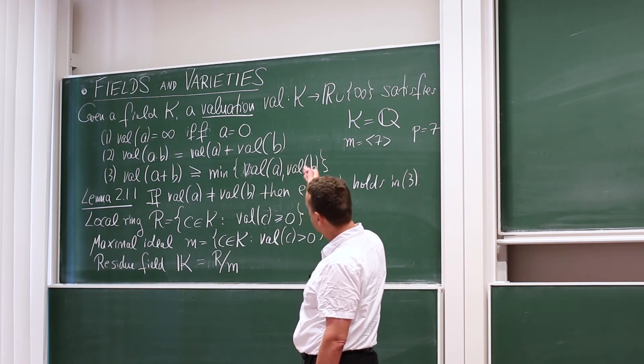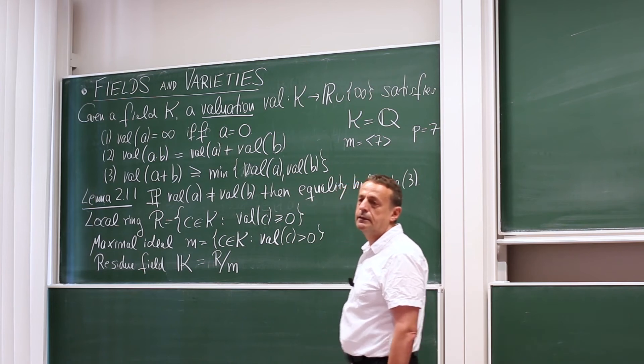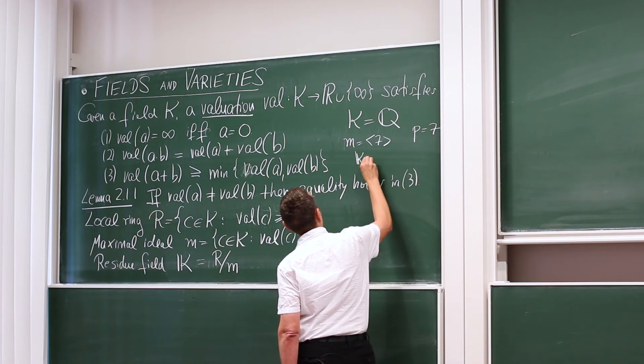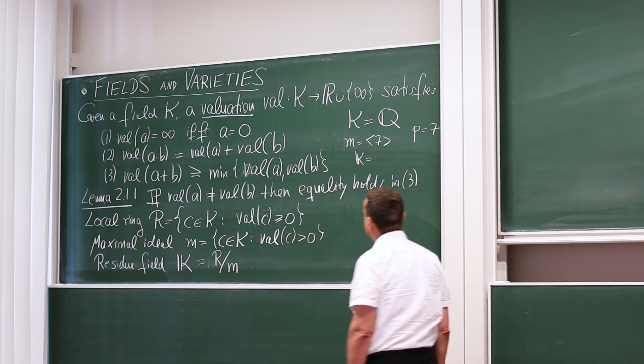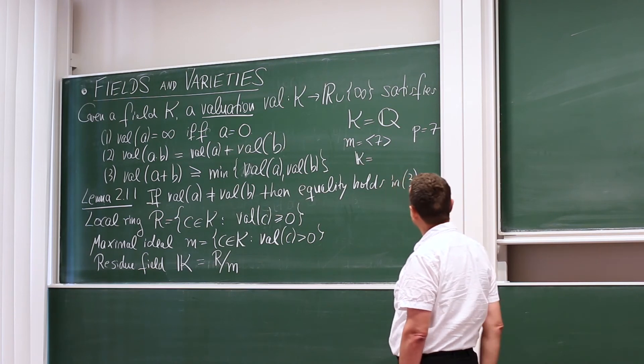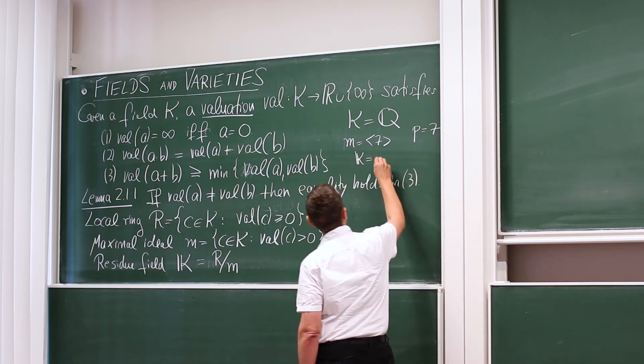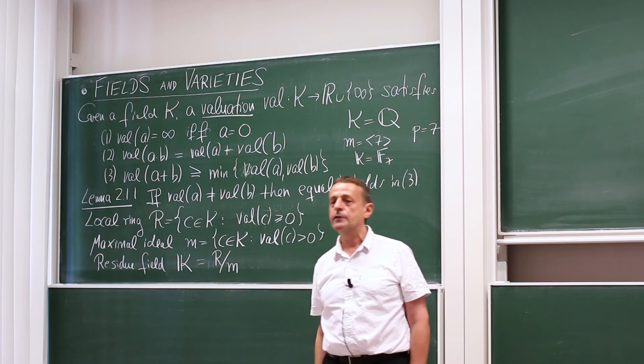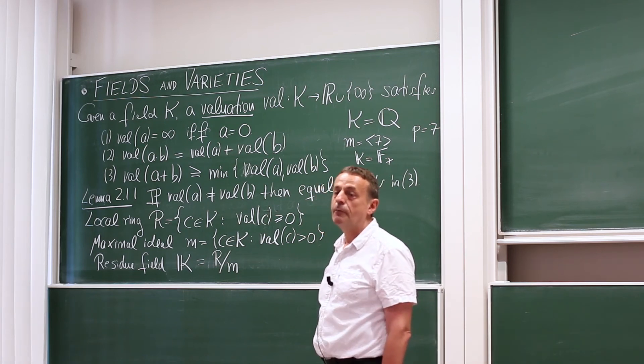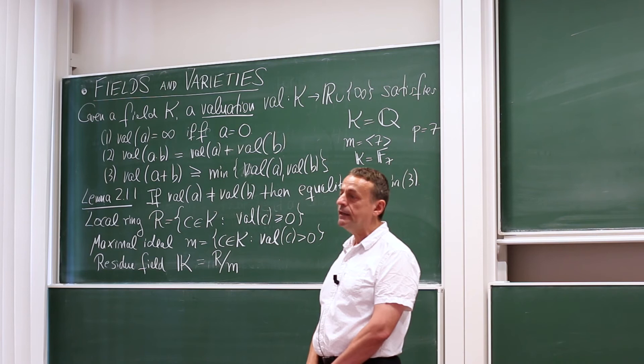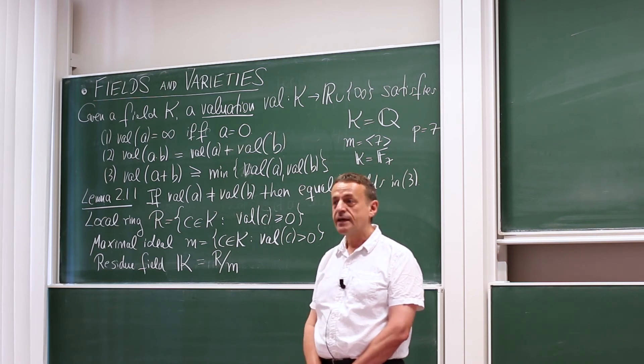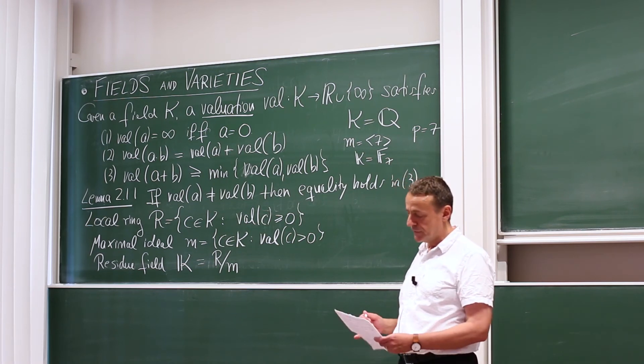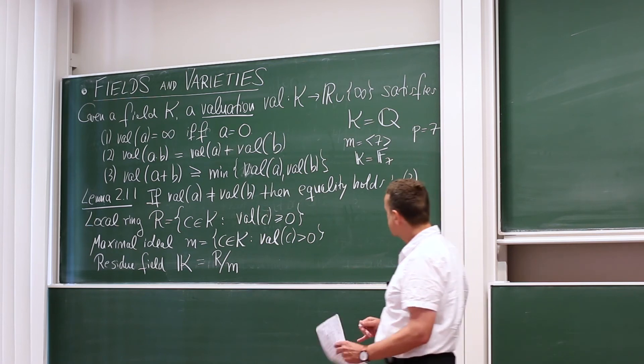So if I tell you we have a field with the valuation, all of this additional data arises and gets carried along for the ride. So in this example, k, well, so I have the local ring modulo the ideal generated by 7. So this becomes the finite field, the small field is the finite field with 7 elements. So in this situation, this is something called mixed characteristic, because big K is a field of characteristic 0, whereas little k, well, it's a field of characteristic 7. So this can happen that the field and the residue field have different characteristics.